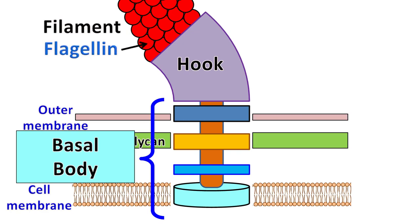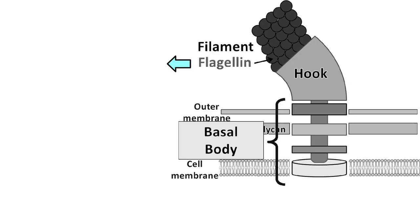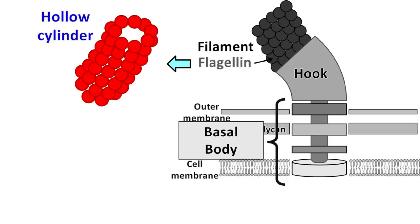The filament of flagella is composed of protein subunits known as flagellin. Flagellin has a molecular weight of 30 to 40 kilodaltons and the subunits are arranged in the form of a hollow cylindrical-like structure.